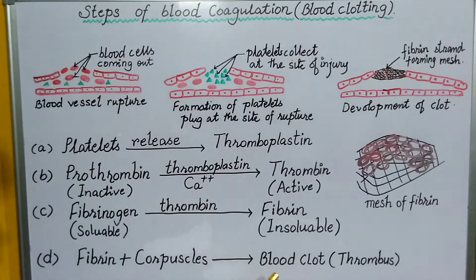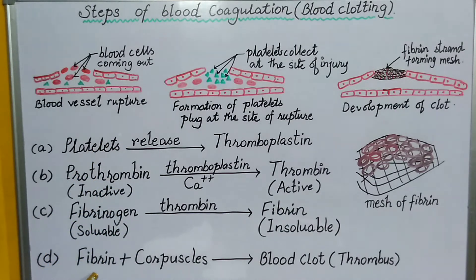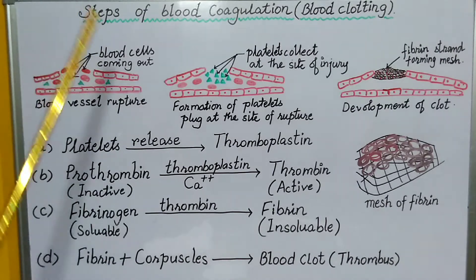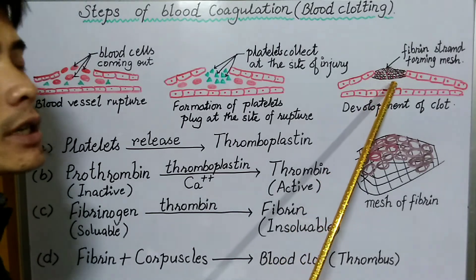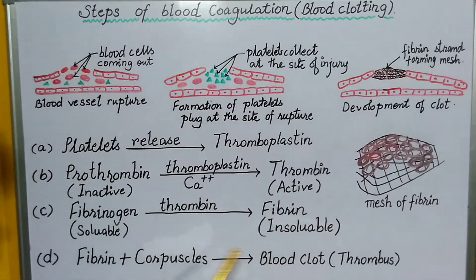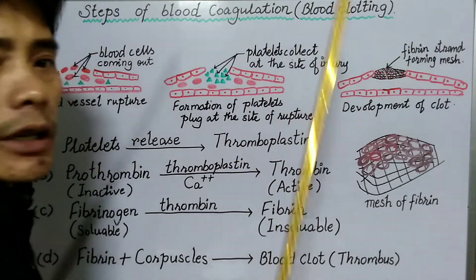This plug is called a thrombus or blood clot, brought about by the formation of fibrin which forms a mesh. The fibrin entangles the blood cells forming a blood clot, biologically termed as thrombus. In summary, a number of chemical reactions take place one after the other, ultimately plugging the site of rupture in the blood vessel and stopping the oozing of blood. This is the explanation for the steps involved in the process of blood coagulation or blood clotting. Thank you.